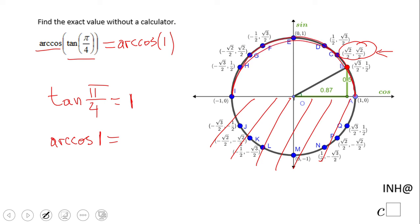So we're going to look in quadrants 1 and 2, and we need to find where the cosine, which is the x-value, is 1. And it is right here at 0 degrees or 0 radians.